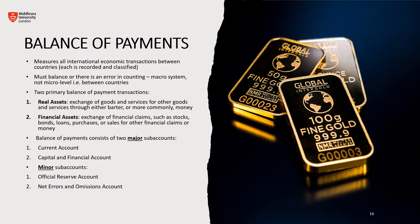Balance of payments measures all international economic transactions between countries — every single transaction is recorded and classified. It is very much like accounting because the balance sheet has to be balanced; the left column must equal the right column with no allowance for error in the macro system. There are two primary balance of payment transactions: the first being real assets and the second being financial assets.